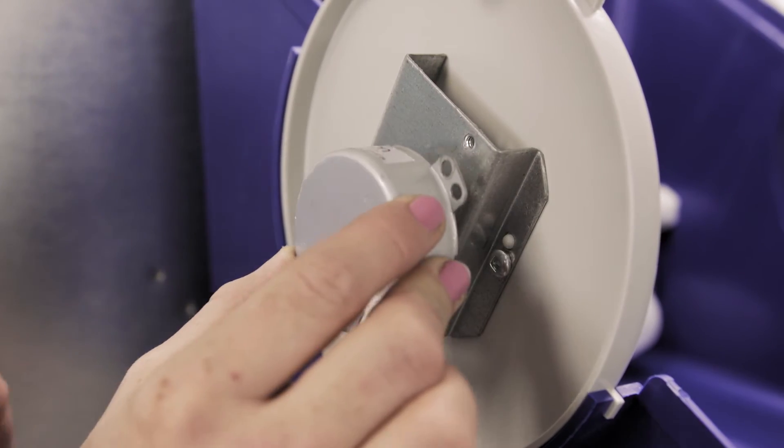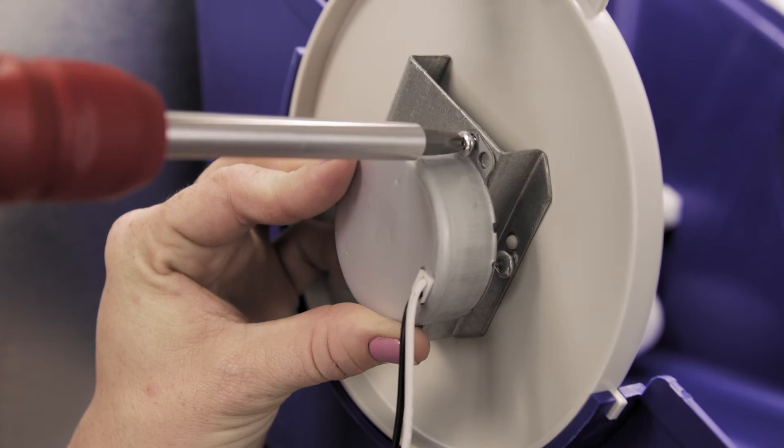Now feed the new motor through the hole in the humidifier housing. Screw and secure the motor into place.